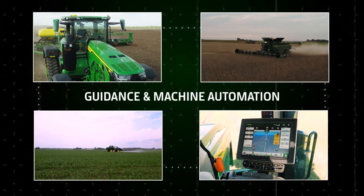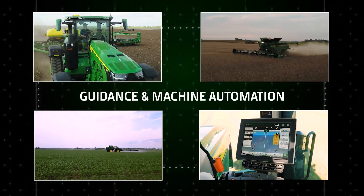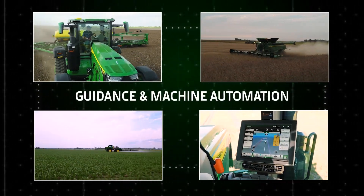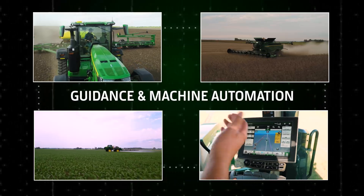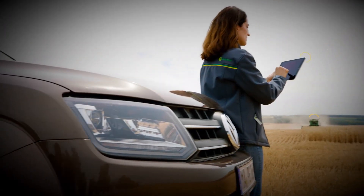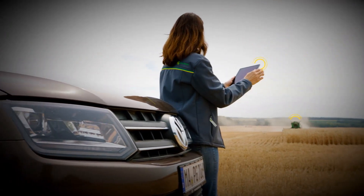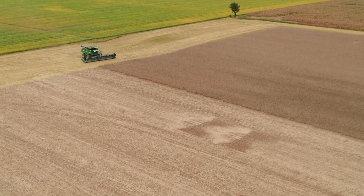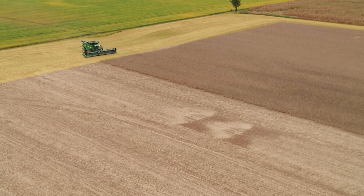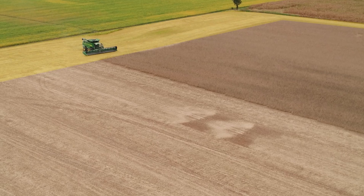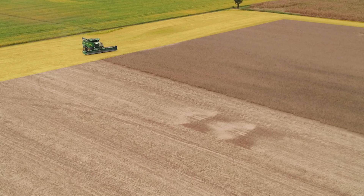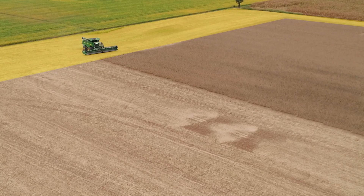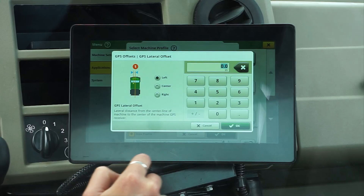So, you want to utilize precision technology on your farm? To take advantage of John Deere's suite of advanced guidance and machine automation products, you must first create a boundary around your field, pinpointing where the physical work will take place.